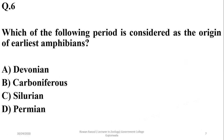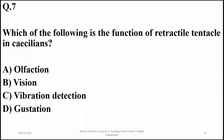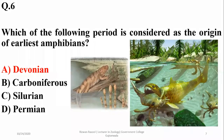Number six: which of the following periods is considered the origin of the earliest amphibians? The earliest amphibians evolved during the Devonian period, and the Devonian period led to the development of amphibians from fishes. So the right option is A.